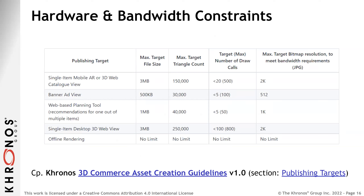Depending on the application, you might have different requirements regarding polygon count. Is it part of a big scene in a floor planner where 20 assets are shown simultaneously, or shown as a standalone viewer? There are also bandwidth requirements — for example, you want the model to appear on screen in less than half a second or three seconds. A preview version should appear almost instantly. When you have an estimation of average or minimum bandwidth you're serving, you can derive requirements on the asset accordingly.